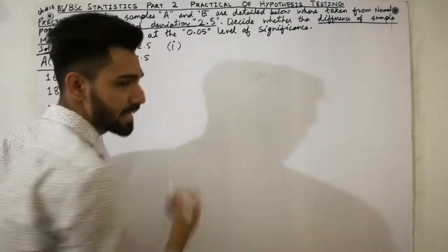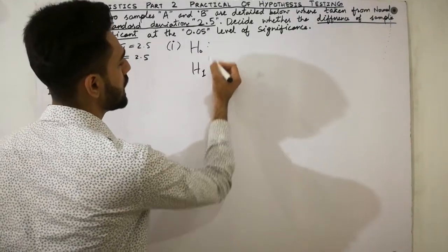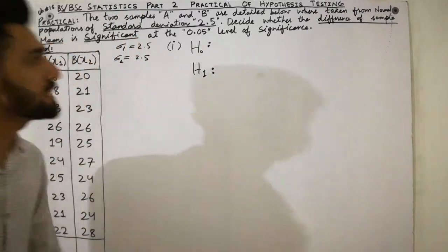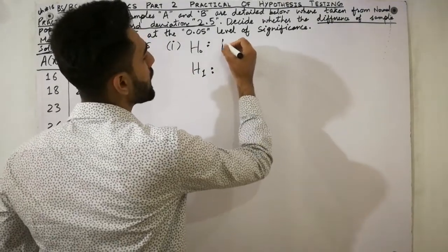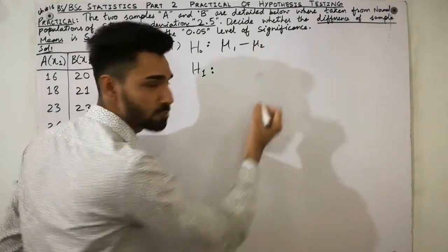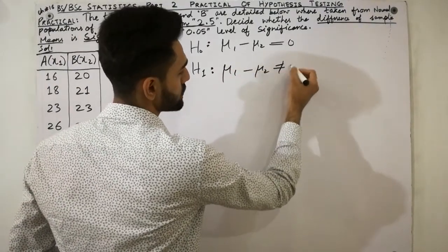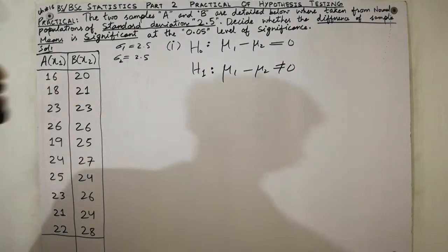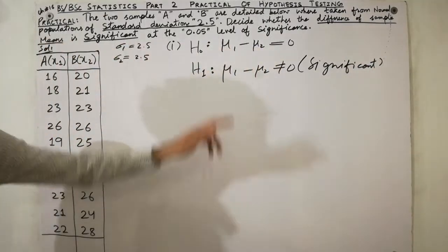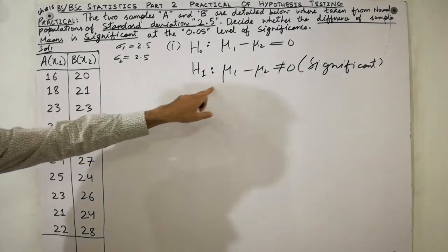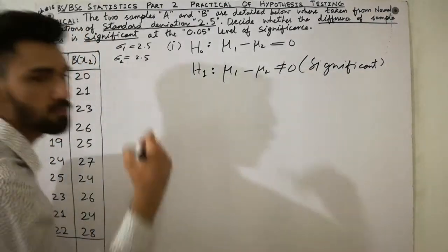The first step is the null hypothesis and alternative hypothesis. Because the case is difference of sample means is significant, the null hypothesis is H0: μ1 - μ2 = 0, and the alternative hypothesis is H1: μ1 - μ2 ≠ 0. So the difference of means equals zero is the null hypothesis, and not equal to zero is the alternative hypothesis.